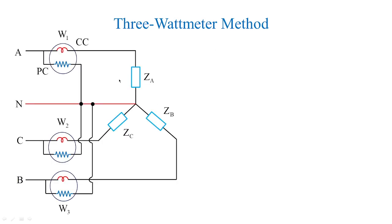In the three wattmeter method, you can take a star load where ZA, ZB, ZC are assumed to be a star load connection given by phases A, B, C, and a neutral point is also there where all the pressure coils are connected. The current coil is connected in series as already defined, and the voltage coil or pressure coil is connected in parallel with the load. Wattmeter 1, wattmeter 2, and wattmeter 3 connections all follow the same rule.